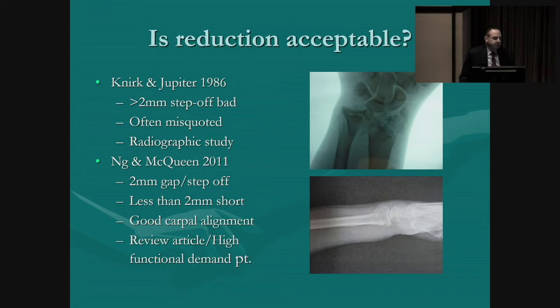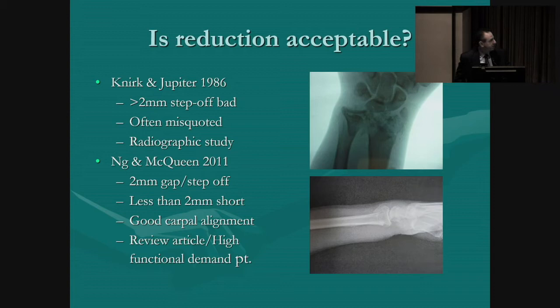You try to get the carpus aligned so that the capitate and lunate are lined up with the distal radius — good carpal alignment. It's nice to aim for less than two millimeters of step-off, but if you have a severely comminuted fracture where part of the articular surface is sitting in the subcutaneous tissues by the ulnar head, even if you reassembled it back to two millimeters or less, it's probably not going to give a favorable outcome.